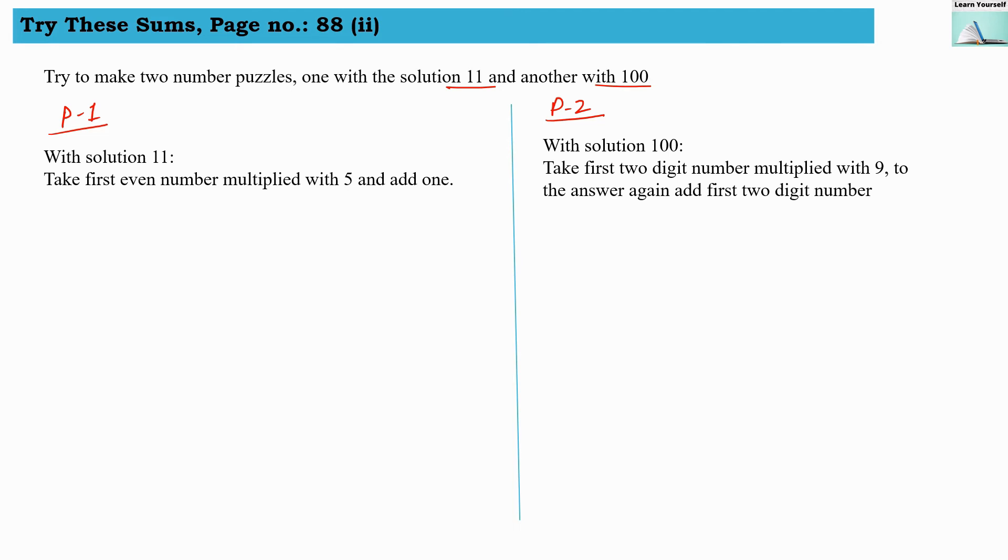Let us see this puzzle: take first even number, multiply with 5 and add 1. We have to find out what is this first even number. The very first even number is 2 multiplied with 5, so 2 multiplied with 5 and add 1. When we multiply this we get 10, and by adding 1 we get solution as 11. This is our first puzzle.